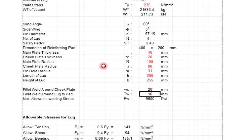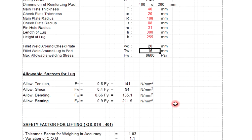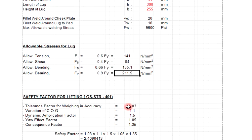The maximum allowable welding stress is 9600 psi. This is the allowable stress for lug. The allowable tension is 141 N/mm², allowable shear is 94 N/mm², allowable bending is 155.1 N/mm², allowable bearing is 211.5 N/mm².